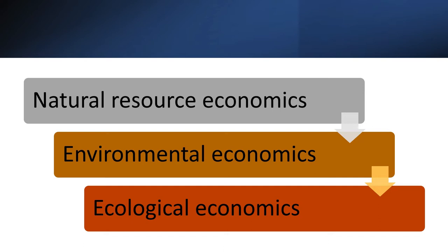To discuss environmental economics, we describe the subject under three main categories: first, natural resource economics; second, environmental economics; and third, ecological economics. These three domains have different areas. Natural resource economics emerged mainly out of neoclassical growth economics, while environmental economics emerged out of welfare economics and the study of market failures.